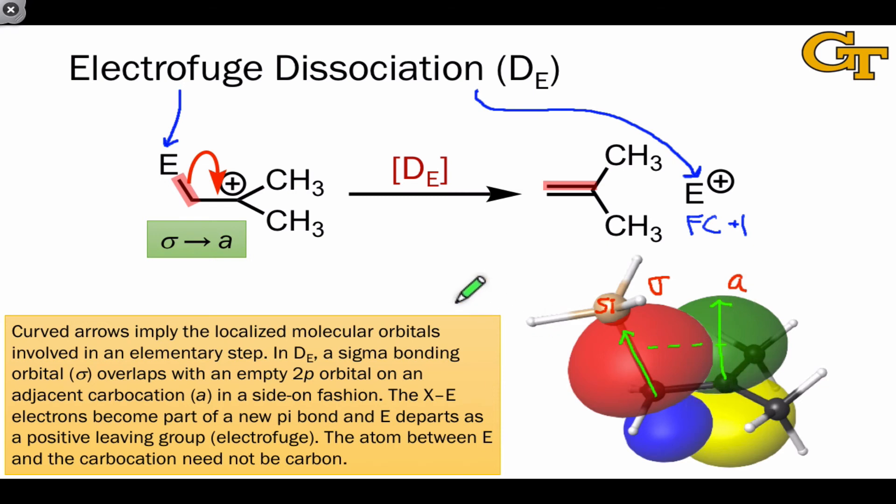Side by side overlap like this is called pi type overlap. One of the reasons it's called this is that it generally, although not always as we'll see in a future video, leads to the formation of a pi bond.